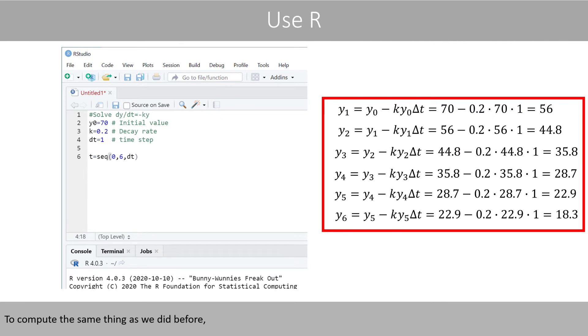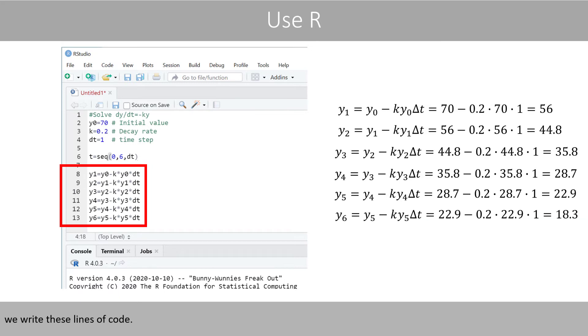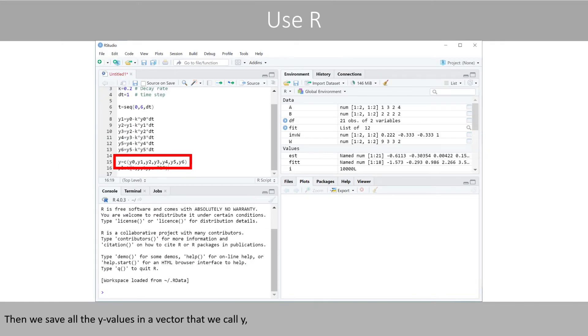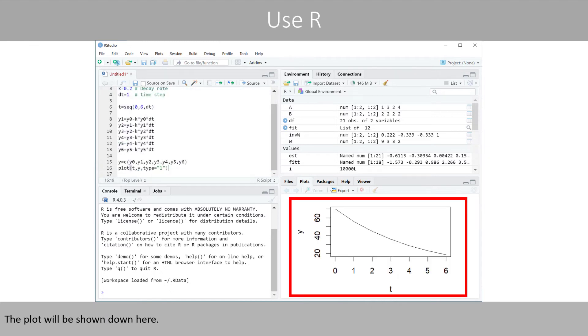To compute the same thing as we did before, we write these lines of code. Then we save all the y values in a vector that we call y. And then we make a plot that shows how y changes over time. To run the code, we select the code and press run. The plot will be shown down here.